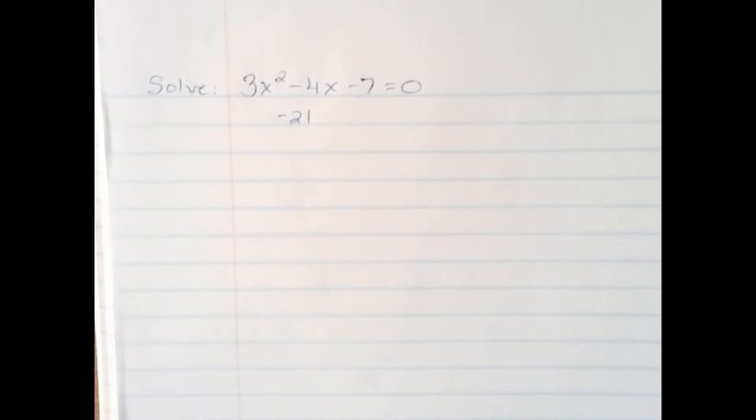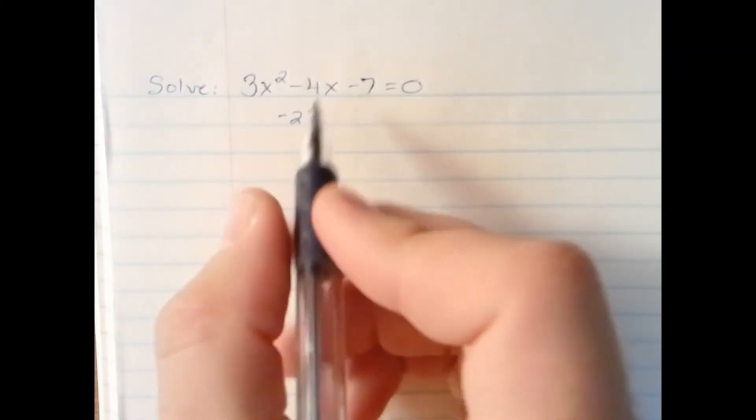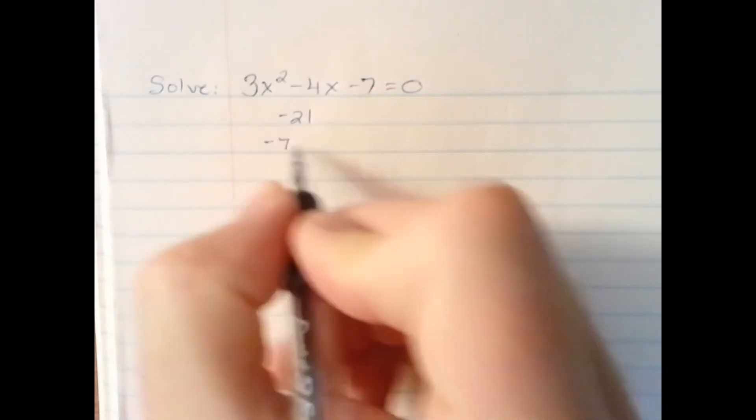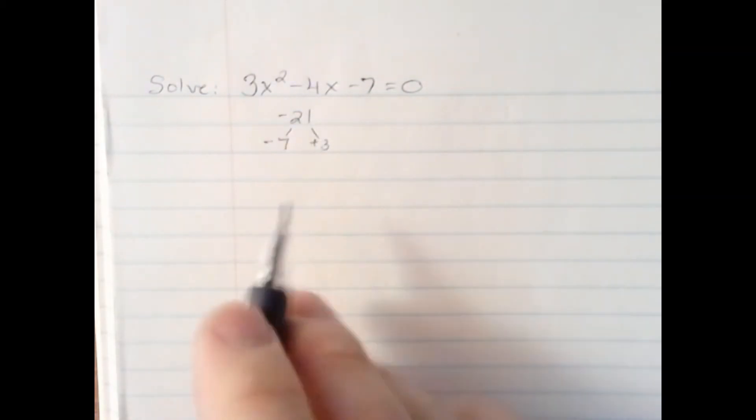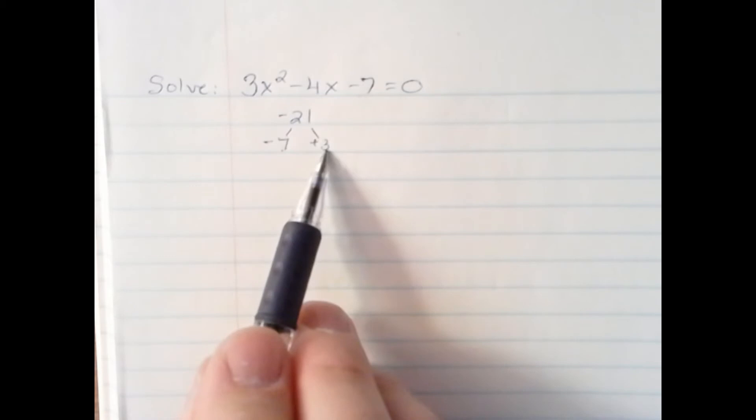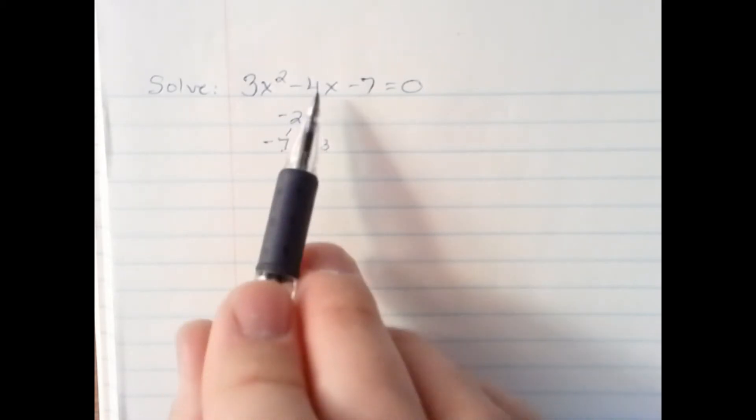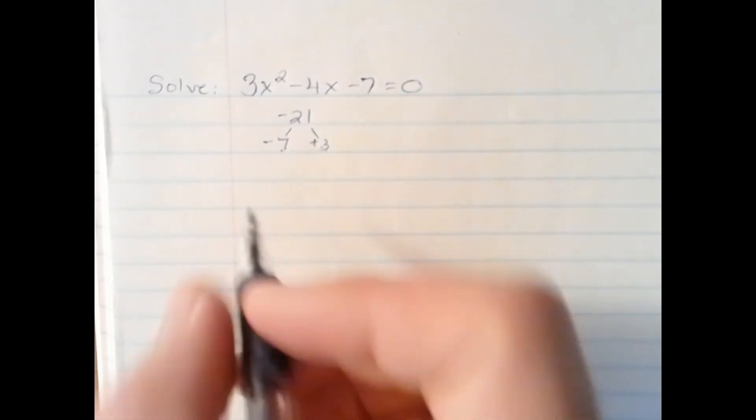Next, we're looking for factors of 21 that add up to negative 4. And the ones that work are negative 7 and positive 3. Because negative 7 times positive 3 makes negative 21, but negative 7 plus positive 3 makes negative 4. So we know that these two numbers are the combination we're after.